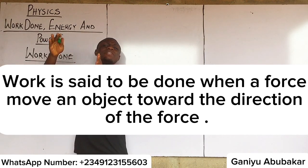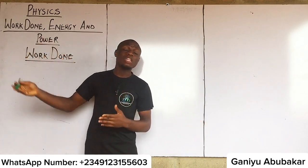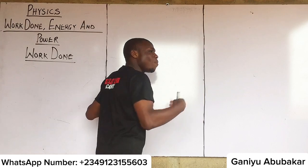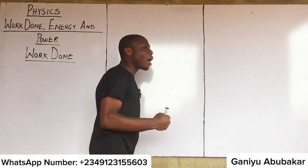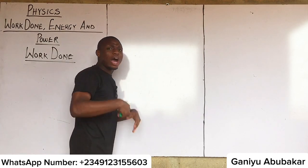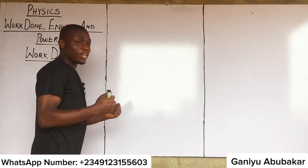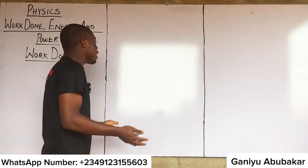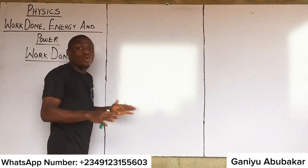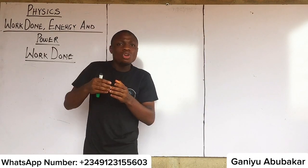Work can only be done when a force moves an object towards the direction of that force. For example, I have this board here — I'm applying a force to it, pushing it, but no matter how much force I apply, if this board does not move any distance, then work has not been done. Even if I apply a force of 5000 kilonewtons, so long as the board does not move, work has not been done.